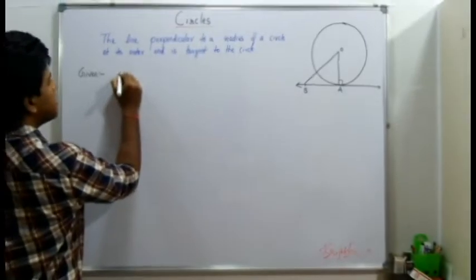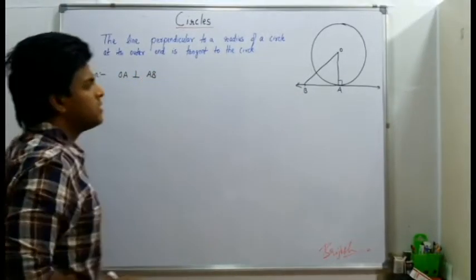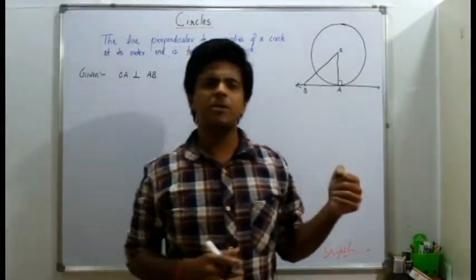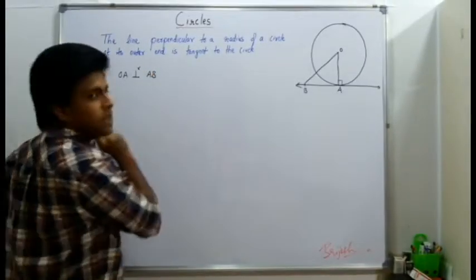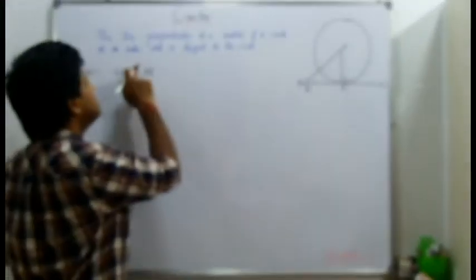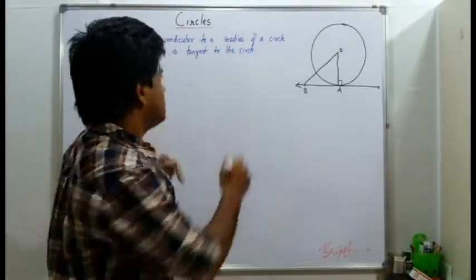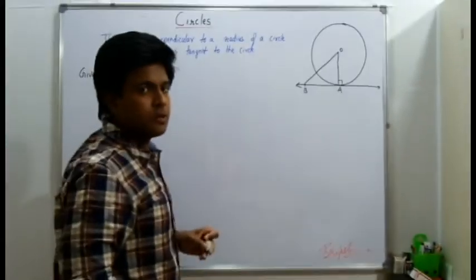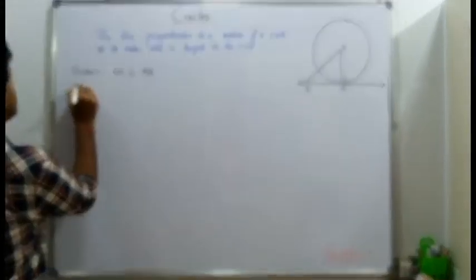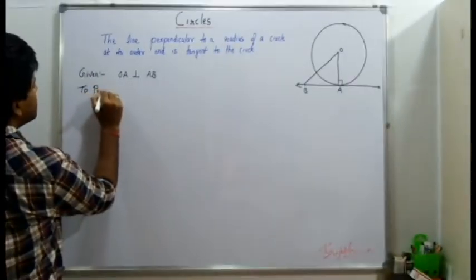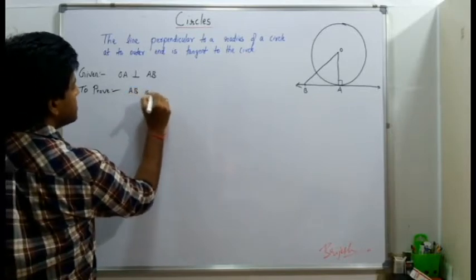We have been given that OA is perpendicular to AB. Please note that in the previous video I have mentioned somewhere while writing perpendicular I wrote this R here by mistake. Please rectify that because this represents perpendicular bisector. OA is perpendicular to AB and we have to prove that AB is a tangent.